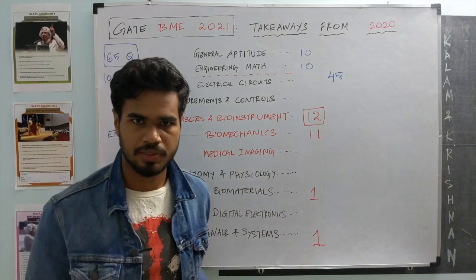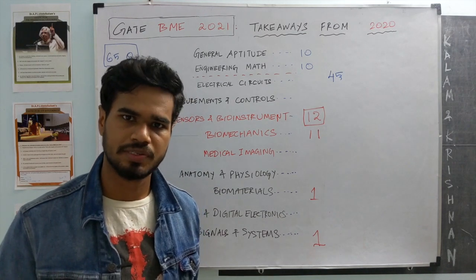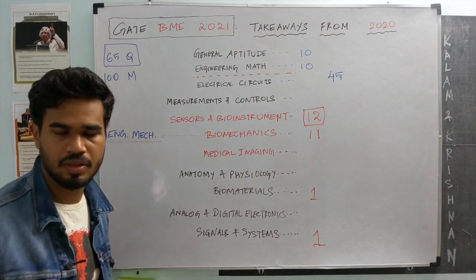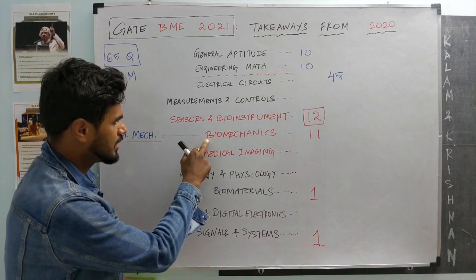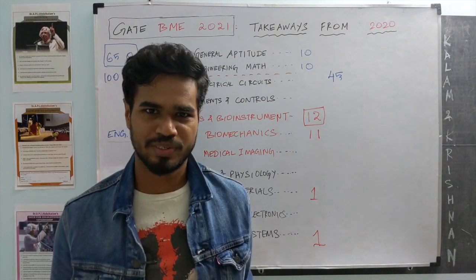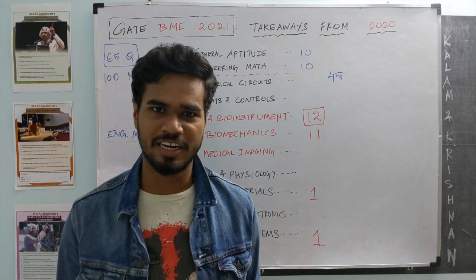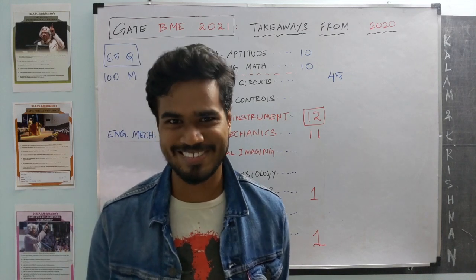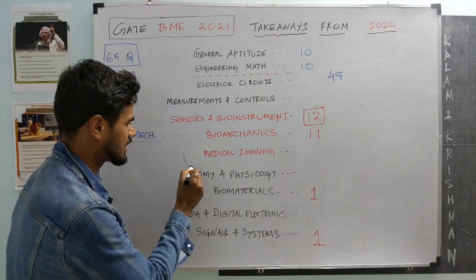The takeaway is that the biomechanics topics addressed in GATE are much simpler than anticipated based on the syllabus — mostly at the engineering mechanics level. However, many questions heavily relied on knowledge of anatomy and physiology. For example, two questions required knowing what a trochanter, knee, and ankle line is. If you didn't know what the trochanter is, you couldn't attempt the question. So biomechanics questions were deeply tied to anatomy and physiology.